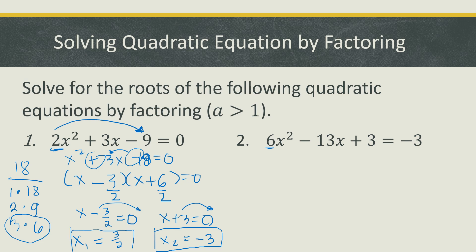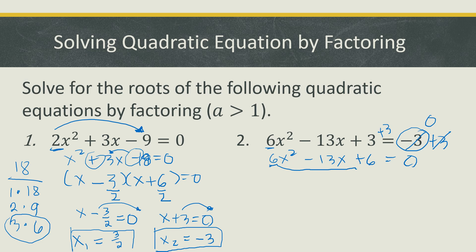Those are the two solutions for 2x² + 3x - 9 = 0. Let us try the second example. Notice that the equation is equated to -3, so we need to make it 0 first by adding 3 to both sides. We now have 6x² - 13x + 6 = 0. Since we have a value of a again, the first step is to multiply a by c: 6 × 6 = 36, giving us x² - 13x + 36 = 0.